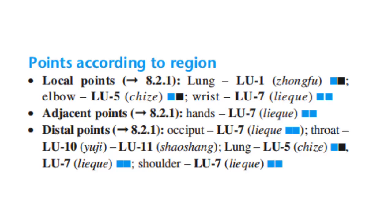Distal points: for the occiput, Lung 7; for the throat, Lung 10 and Lung 11; for the Lung, Lung 5 and Lung 7; and for the shoulder, Lung 7.